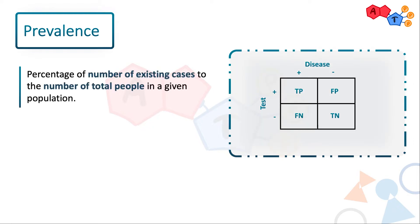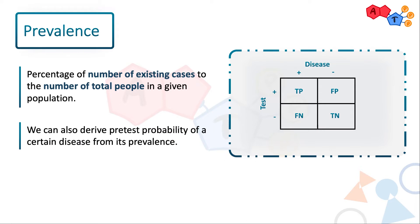So what is prevalence? It is the percentage of the number of existing cases to the number of total people in a given population. For example, let's say a population is composed of 10 people and one of those people has diabetes. That means the prevalence of diabetes in that particular population is 10% — 1 over 10. We can also derive pre-test probability from prevalence; it's just the same thing. Pre-test probability is the probability of having a disease before you even test it. So in our example of 10 people with one diabetic, the pre-test probability is 10%, the same as prevalence.